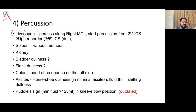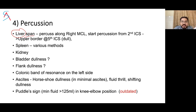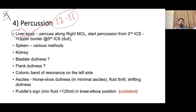Moving to percussion: percussion is very important to confirm hepatomegaly — not all palpable livers are hepatomegaly. In fulminant hepatic failure, daily percussion of liver span gives an idea of disease severity. Absence of liver dullness in acute abdomen suggests gas under the diaphragm. Normal liver span on tidal percussion is 12 to 15 cm, depending on patient height. To measure, percuss along the right mid-clavicular line from the second intercostal space — find where lung resonance changes to dullness (around fifth intercostal space = upper border of liver), then mark the lower border to calculate the span.